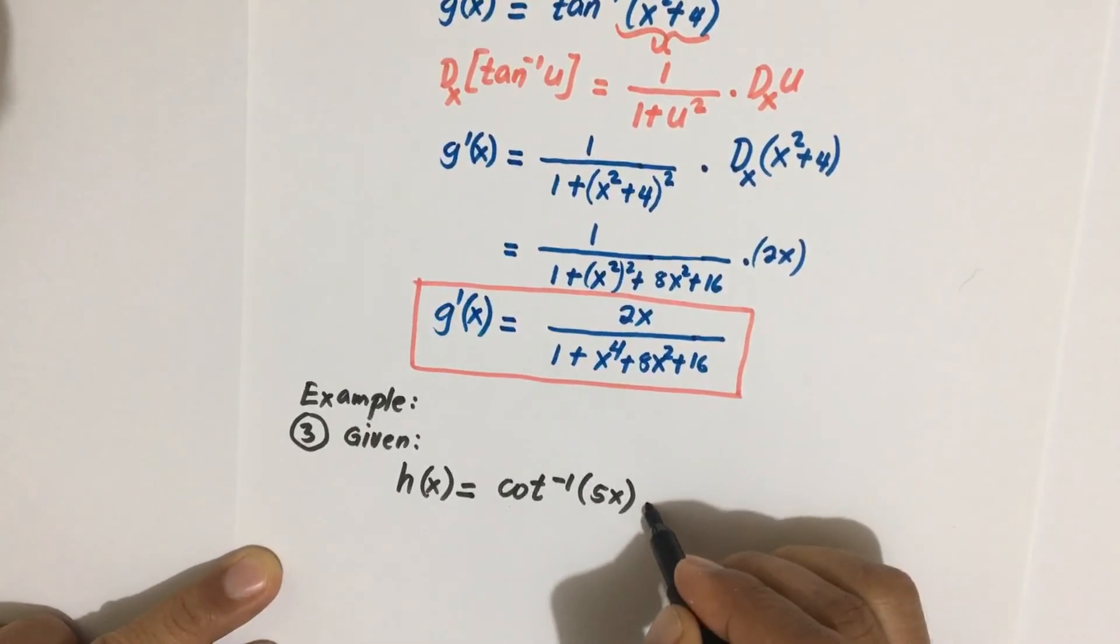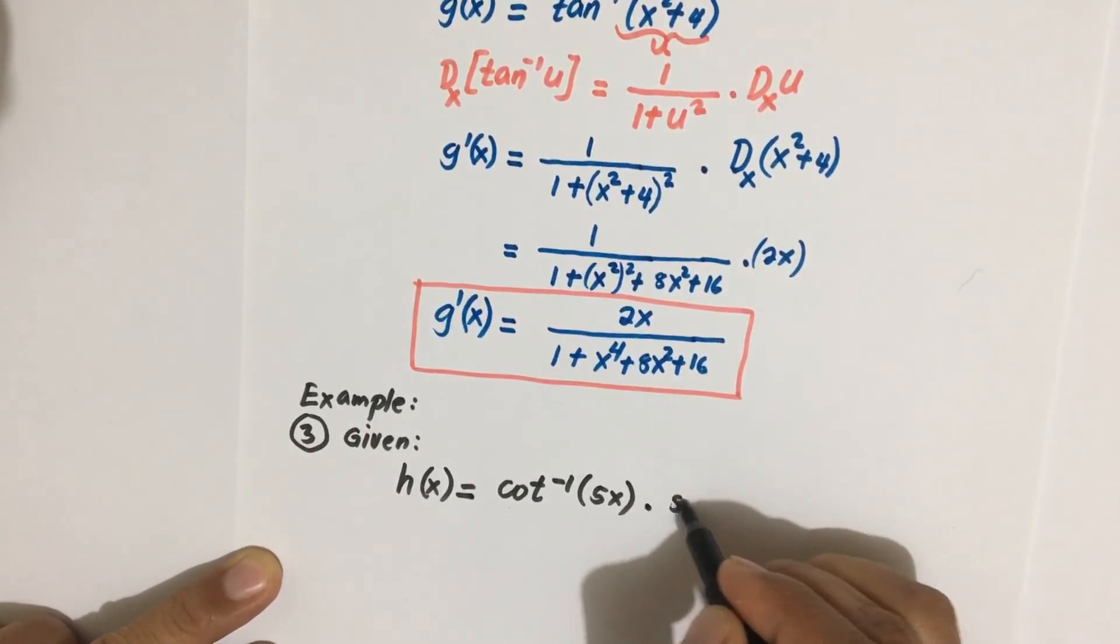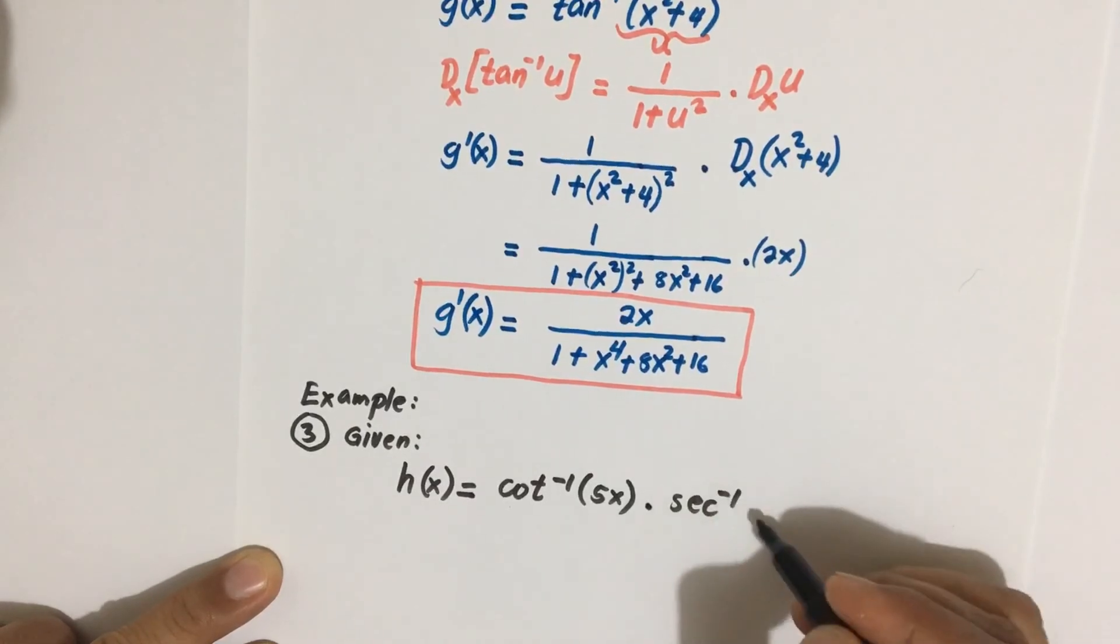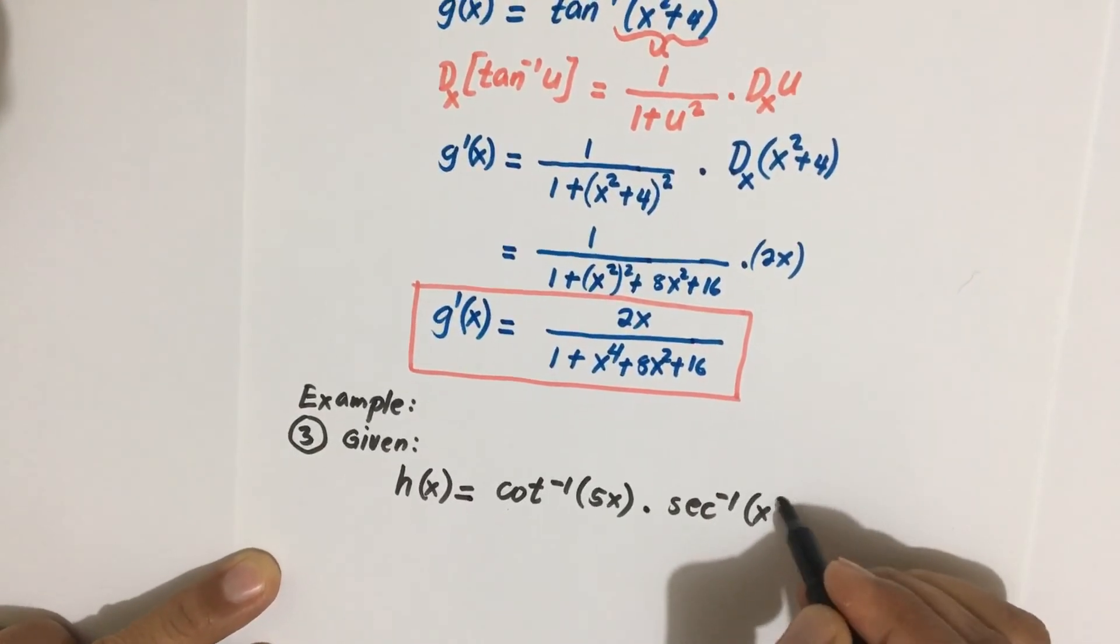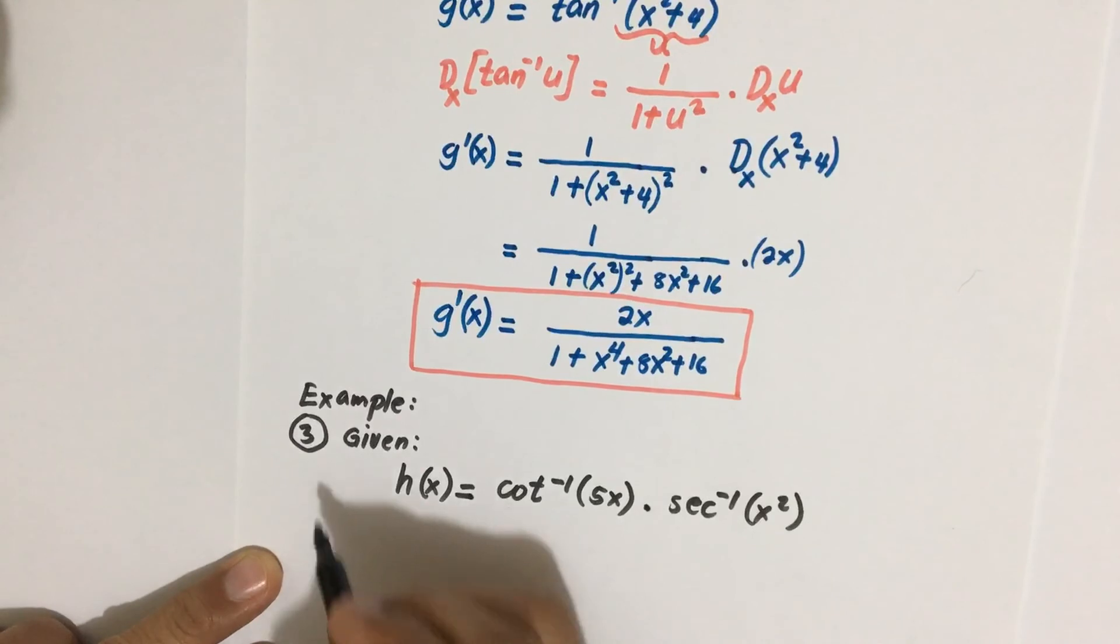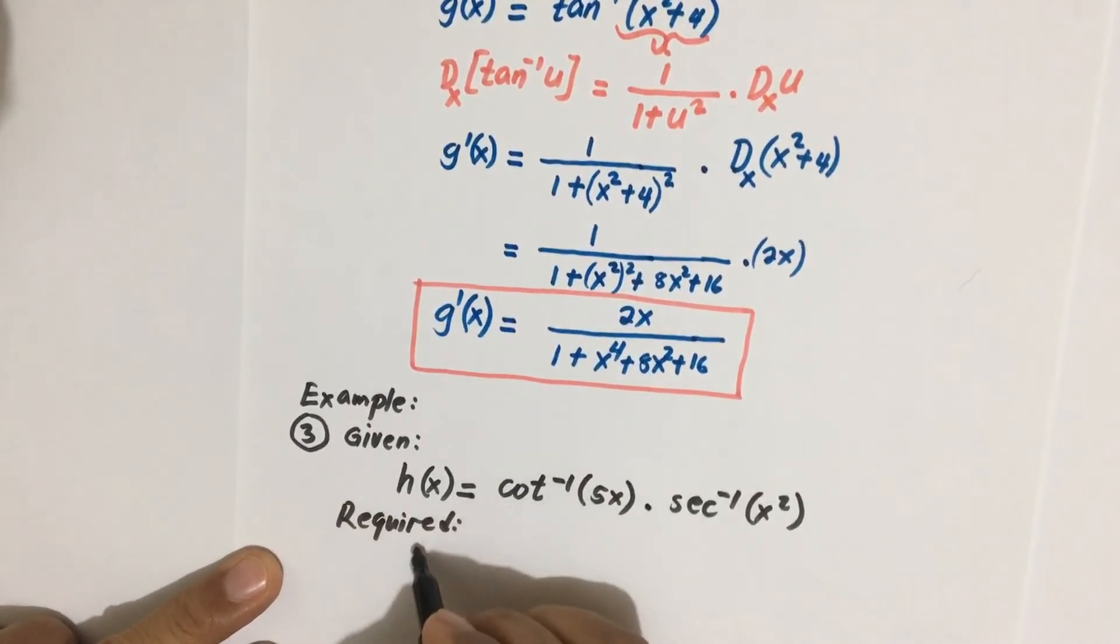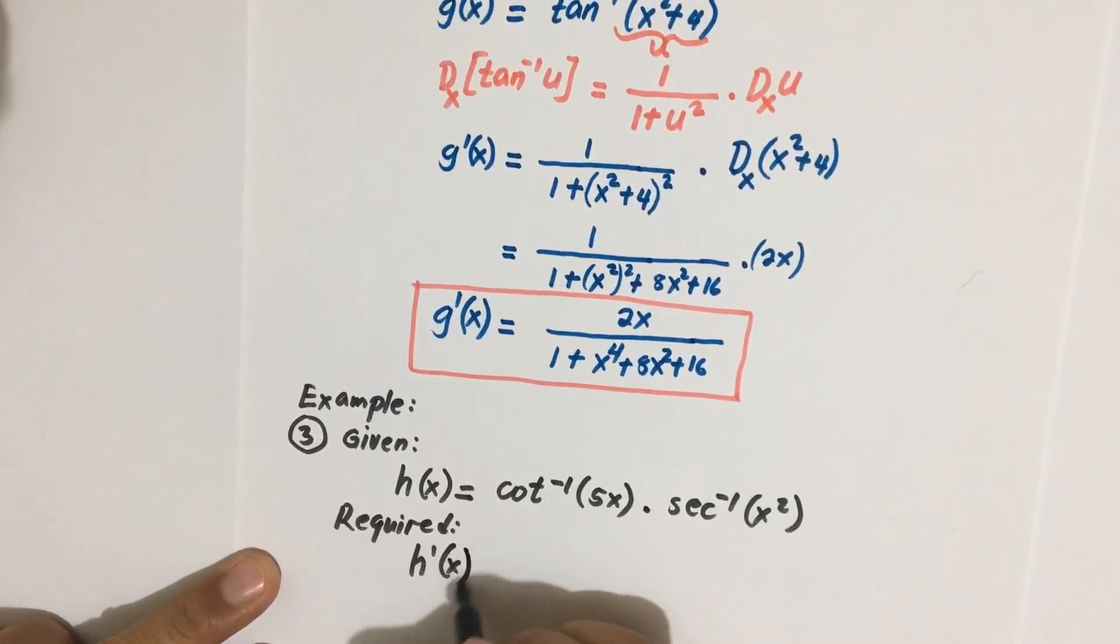times inverse secant of x squared. Okay, and then you are asked to solve for the h prime of x.